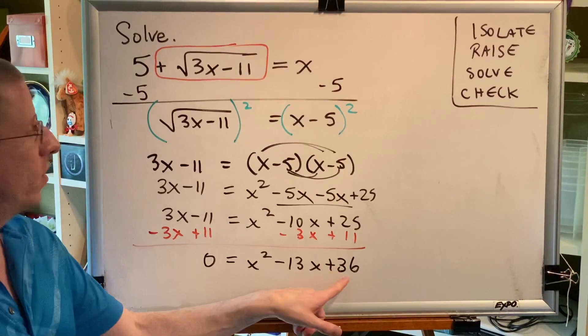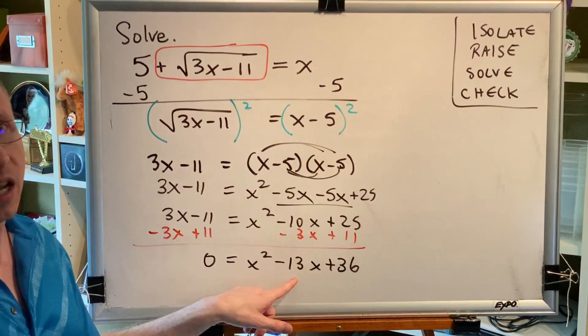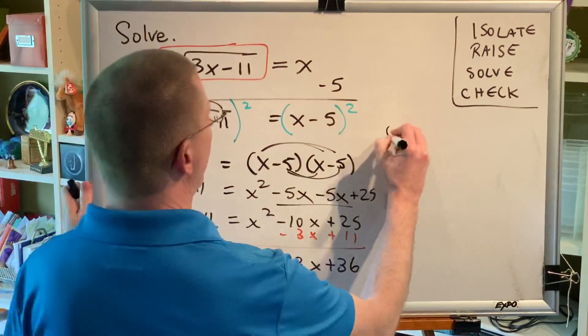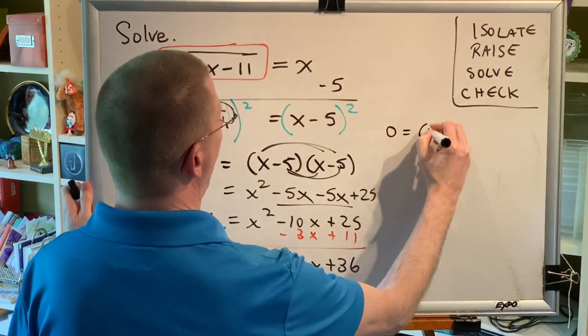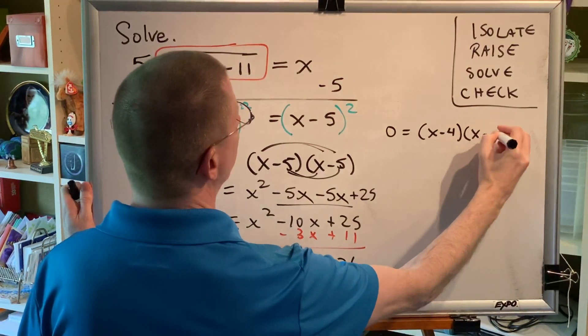I just have to come up with two numbers that multiply to make 36 but add to make negative 13. Those numbers would be negative 4 and negative 9. So this can now be written as 0 equals x subtract 4 times x subtract 9.